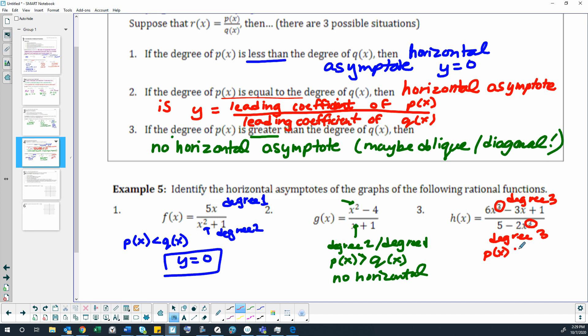In this case, we have p of x degree is equal to the q of x degree. When that happens, we have the second item here for our horizontal asymptote. It would be y equals the leading coefficient in the numerator, which is six, divided by the leading coefficient in the denominator, which is negative two. Which gives us a horizontal asymptote of y equals negative three. I rewrote the whole thing y equals negative three, because it's an asymptote, it's a line. We've got to have the equation of a line.